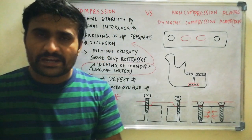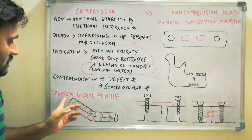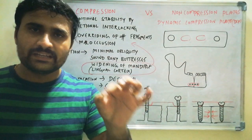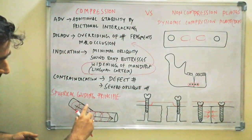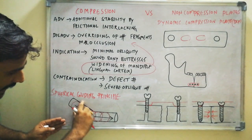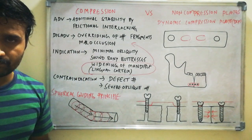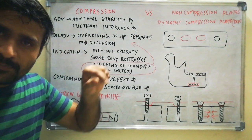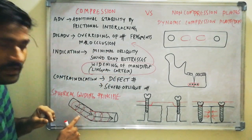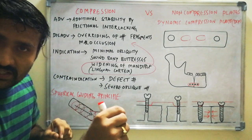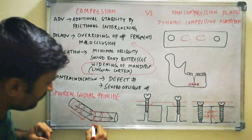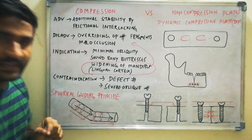Compression plates work on the principle of spherical gliding. If you take an angled cylinder, this cylinder is angled and there is a horizontal part as well. If you place a sphere within this cylinder, it first moves obliquely downwards and then follows a horizontal direction.